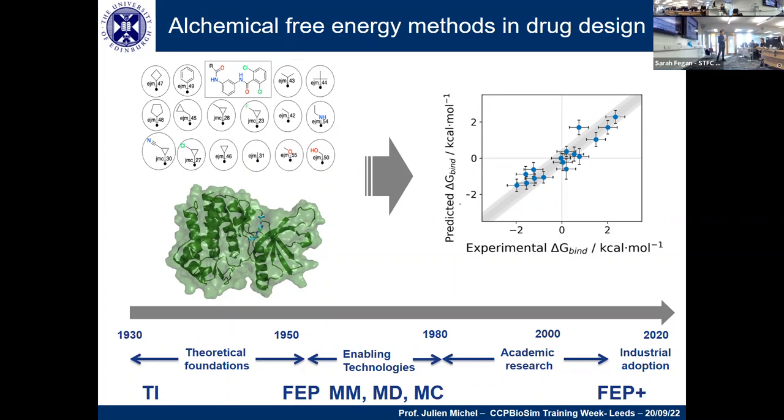This is a perfect candidate problem for a relative binding free energy calculation. What it should give you is the output shown on the right: the predicted delta G bind and the experimental delta G bind. You can see this really pretty good correlation between the two, which means this would be a good method for prioritizing compounds for synthesis in the lab. You save yourself a lot of time and investment.